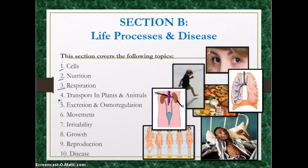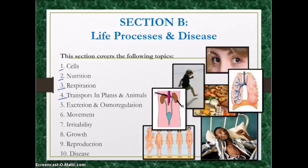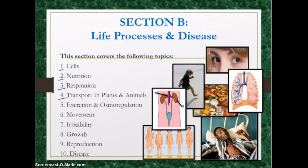Moving on to transport in plants and animals. In animals, you should know your heart structure, the components of blood, and your blood vessels — comparing arteries, veins, and capillaries. You should also know about the immune system, the different types of immunity (natural versus artificial, active versus passively acquired), and the blood clotting process. For plant transport, know the structure of the xylem and phloem vessels, the process of transpiration — the movement of water from roots to leaves — and food storage.